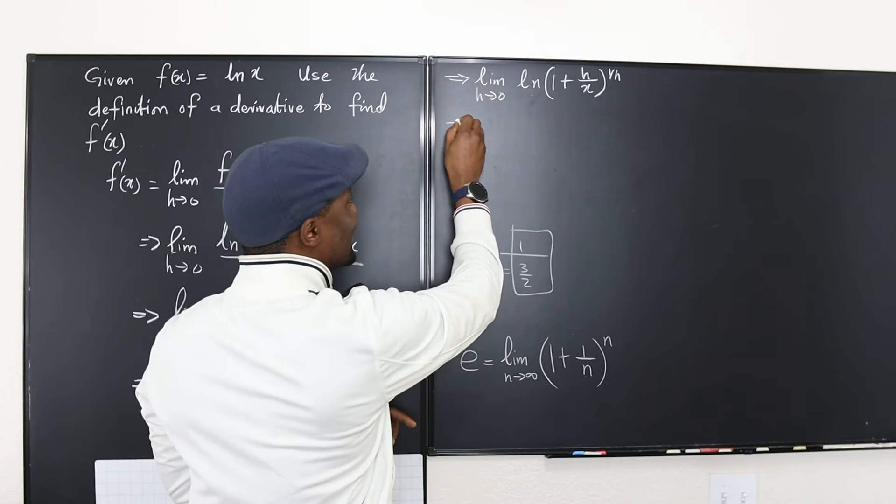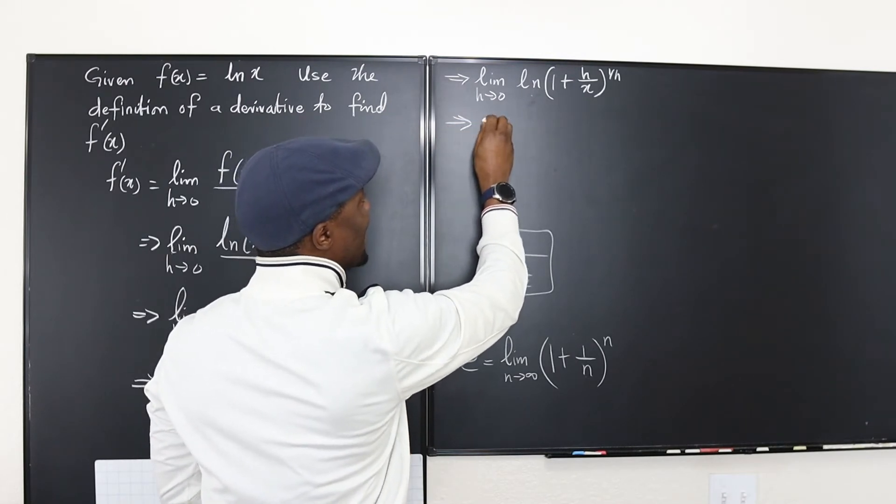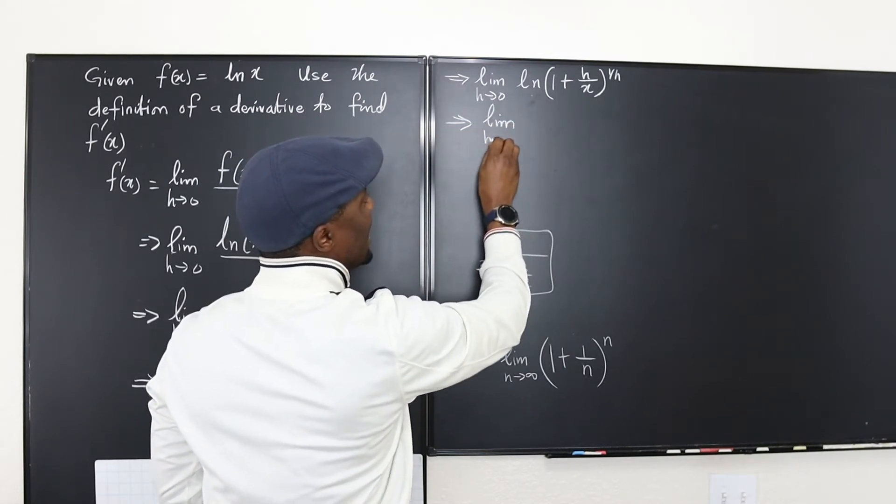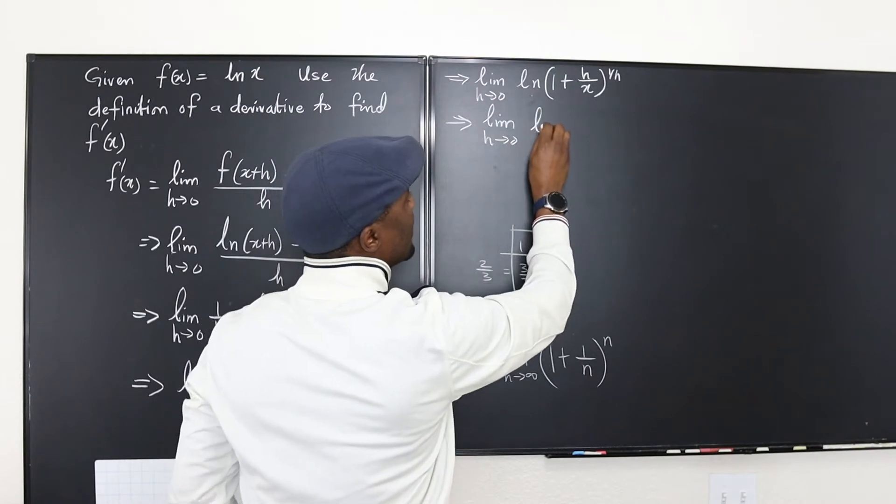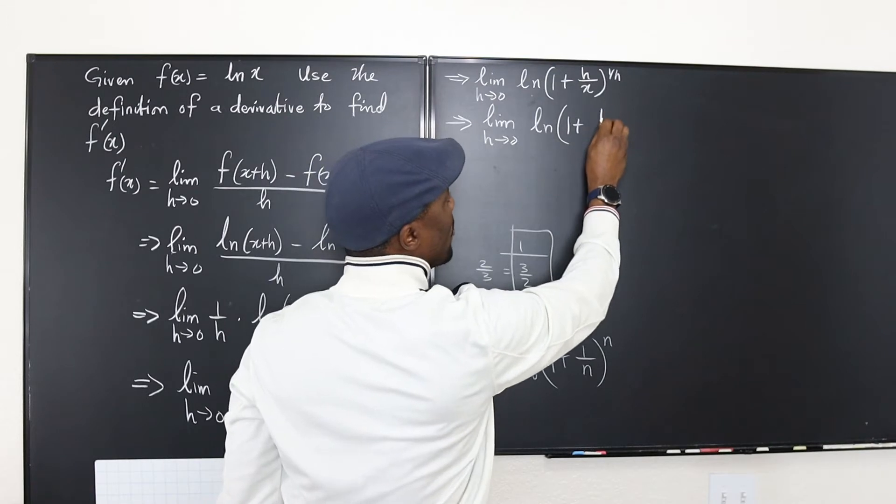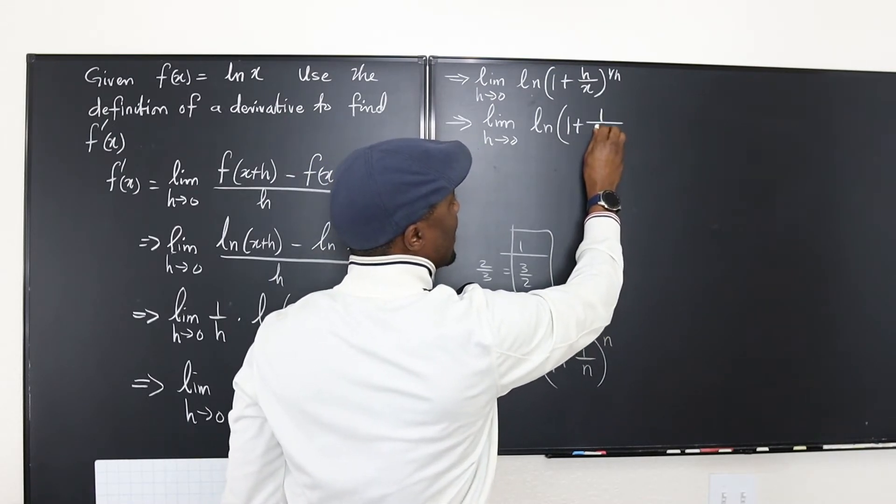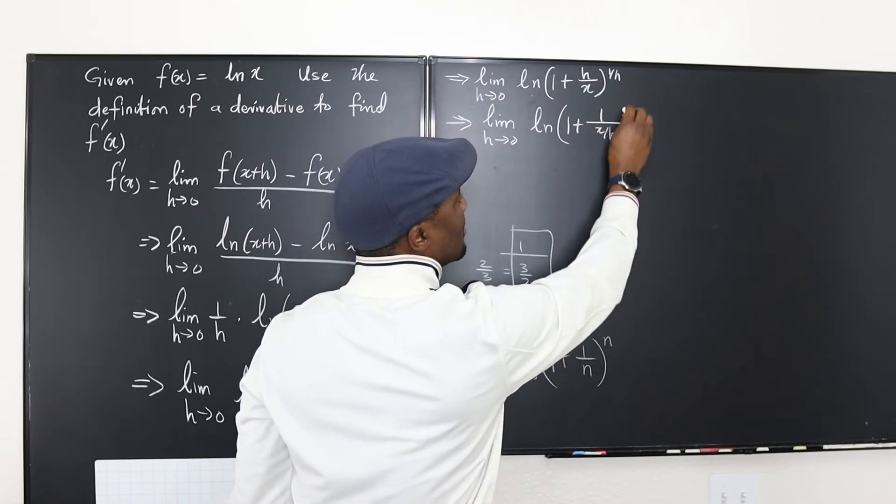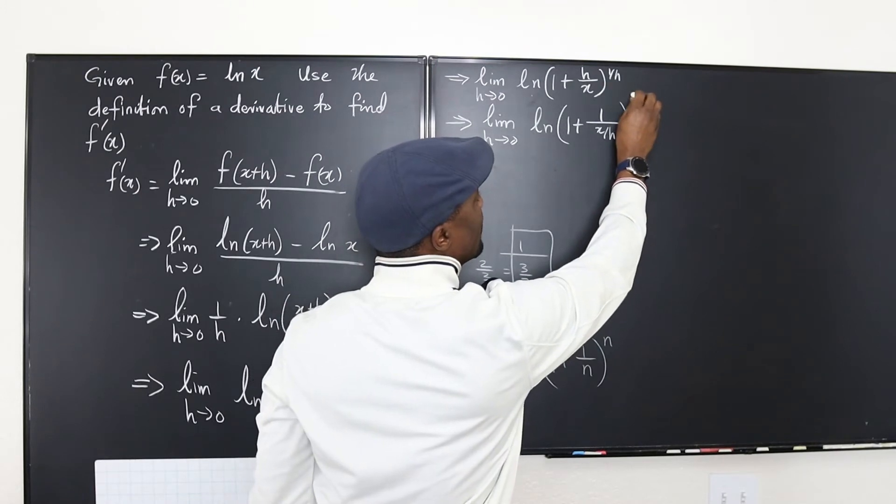Now let's do it. This is going to be the same thing as the limit as h goes to zero of the natural log of 1 plus 1 over x over h to the 1 over h.